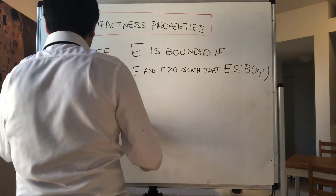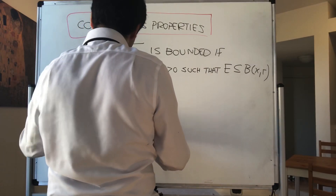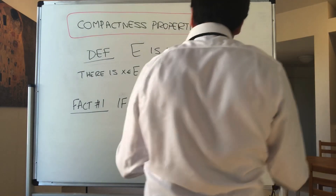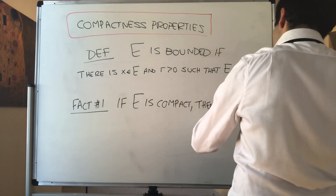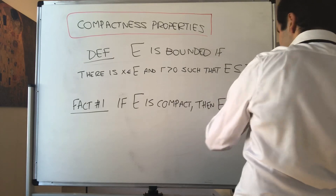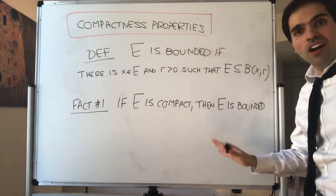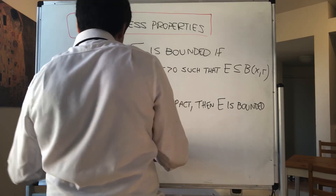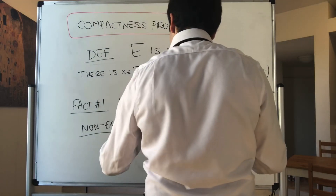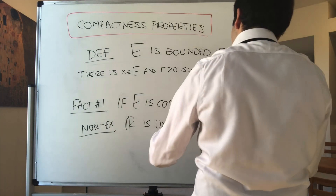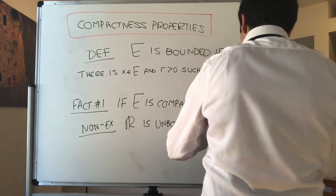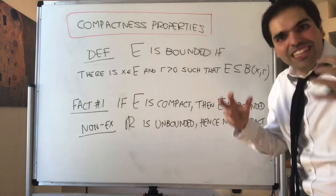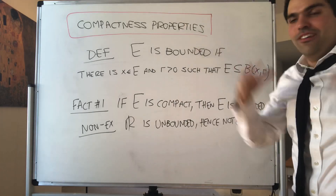Fact one: if E is compact, then E is bounded. By the way, this is yet another proof why R is not compact. For instance, non-example: R is not bounded, so it's unbounded, hence not compact. So compact sets must have some oomph — namely, they should be compact, they shouldn't be unbounded, so they are bounded.